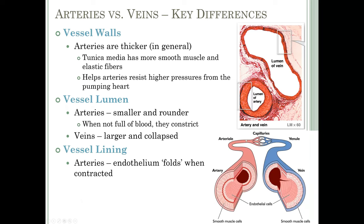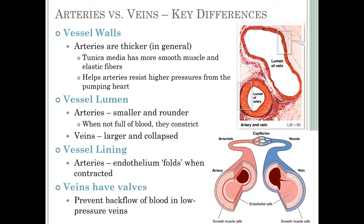Another difference is the vessel lining. In arteries, because of all the muscle that can constrict, the endothelial layer can fold when the artery is contracted, giving a ridged appearance shown by the squiggly red elastic membrane line. You don't see that inside veins. Another key difference is that veins have valves — the valves prevent backflow of blood because pressures in veins are too low to keep blood moving in one direction. The valves are extensions of the tunica intima.